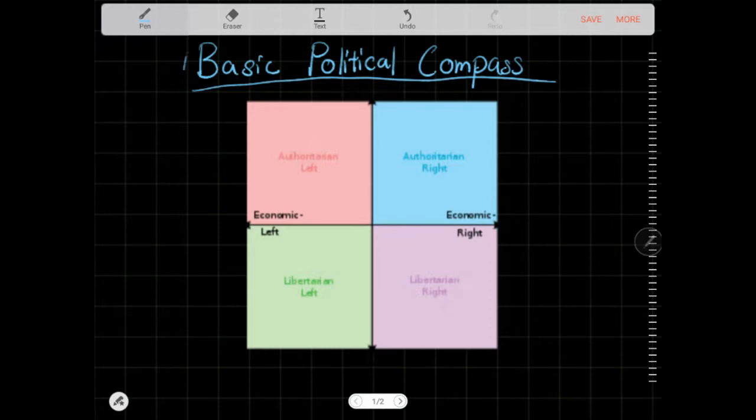The basic political compass is split into four quadrants and it's drawn by two scales. This is called the economic scale, the horizontal one, and the vertical one is called the social scale.